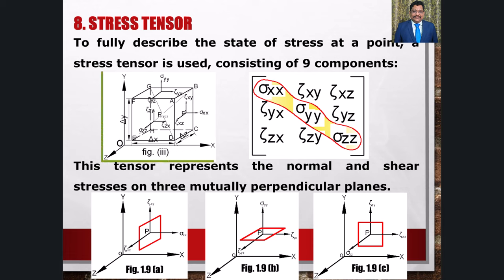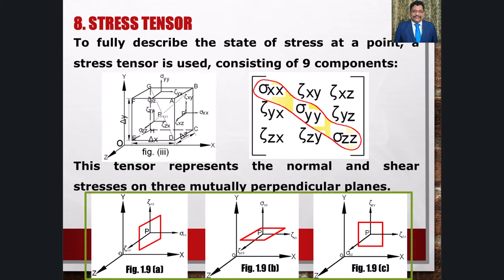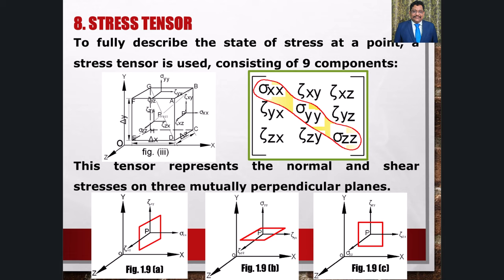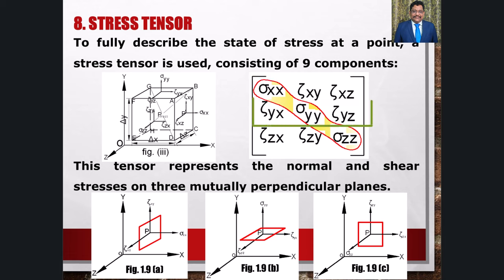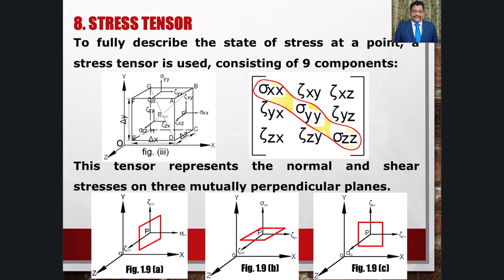इसी तरह positive y face और positive z face को भी P के थ्रू माना जा सकता है। Negative faces पर stress के components भी exist करते हैं, उनका magnitude positive faces पर उनके counterparts से infinitesimally अलग होता है। किसी भी point पर arbitrary surface element पर stress vector का magnitude और direction उस point पर act करने वाले 9 Cartesian components के terms में specify किया जा सकता है। इन components को matrix form में लिखा जाता है: [sigma_xx, tau_xy, tau_xz; tau_yx, sigma_yy, tau_yz; tau_zx, tau_zy, sigma_zz]। Matrix के diagonal elements normal stresses होते हैं और off-diagonal elements shear stresses होते हैं।